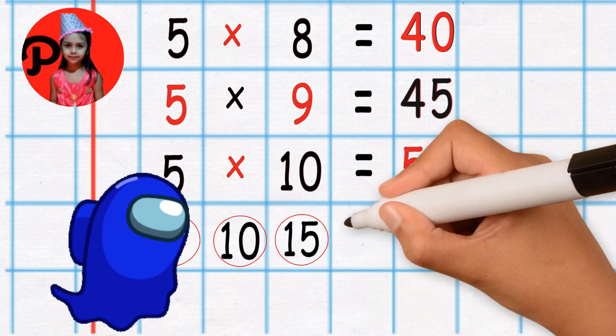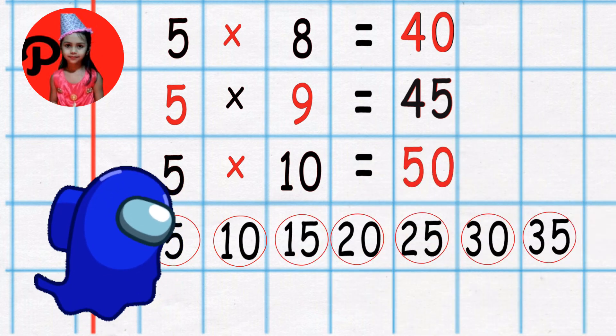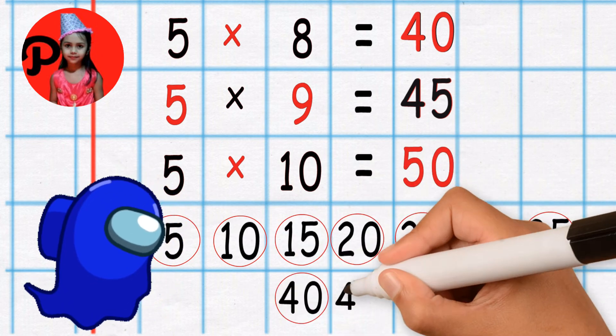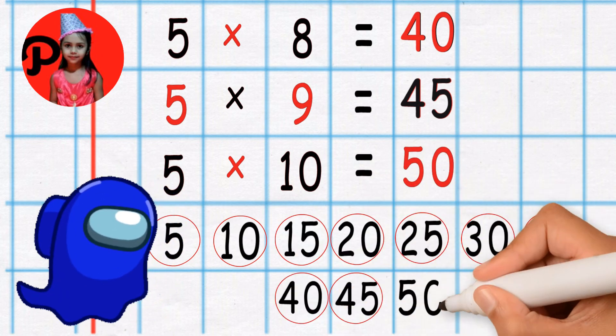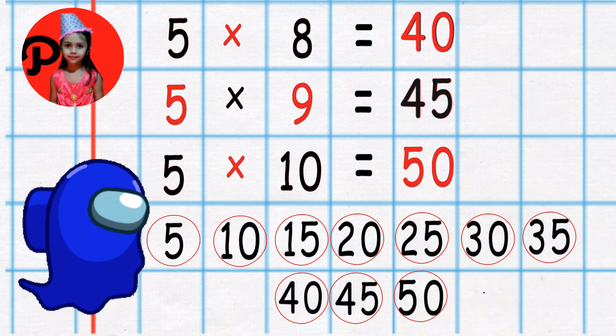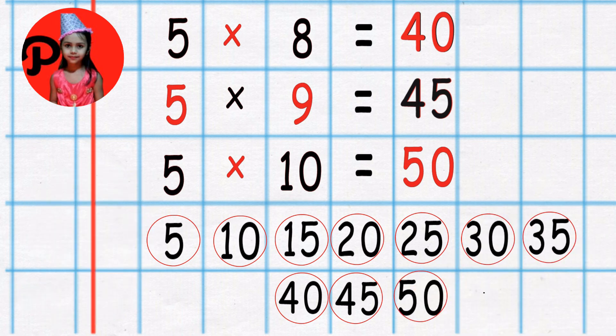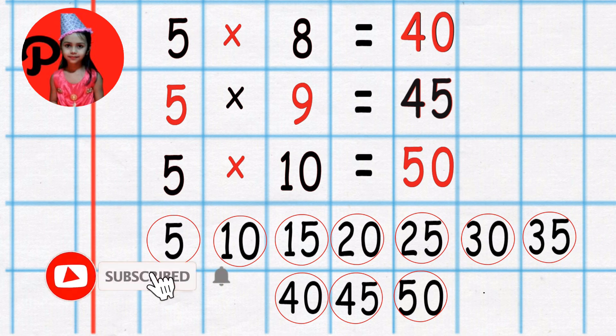So it's like: five, ten, fifteen, twenty, twenty-five, thirty, thirty-five, forty, forty-five, fifty. Thanks for watching, kids. Hope you like it. Bye bye!